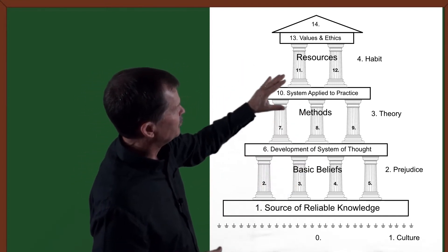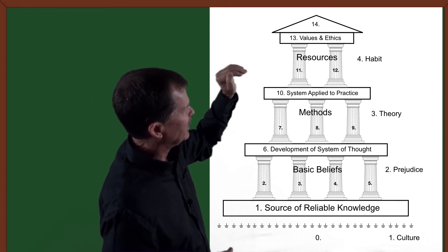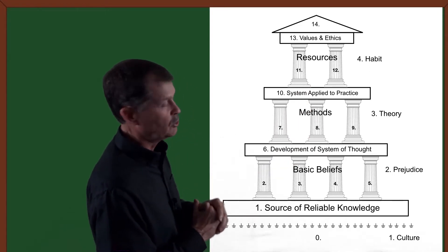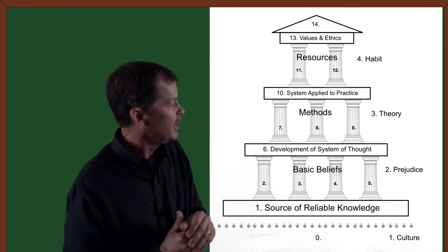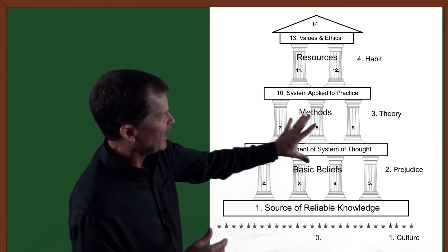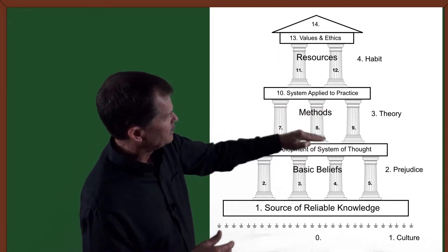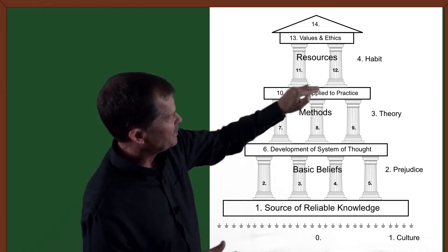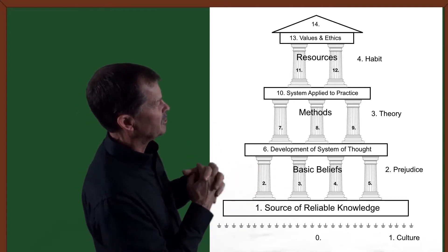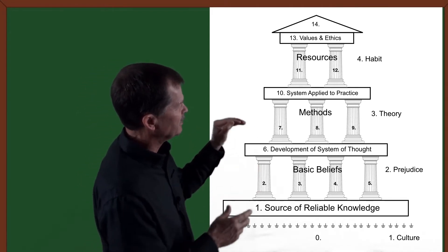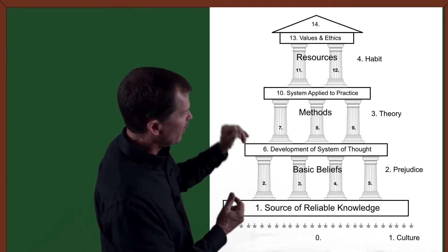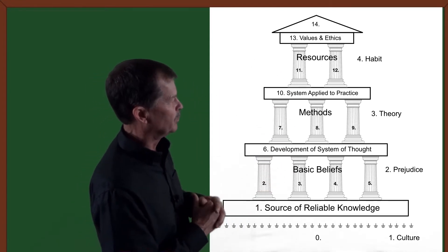That correlates with the four factors Stephen Jay Gould mentioned in his article. On the side of the house going from culture to prejudice, to theory, to habit — those are the four factors Gould mentions, and how they relate to philosophy, worldview, and the building of the house and where we're going with it.